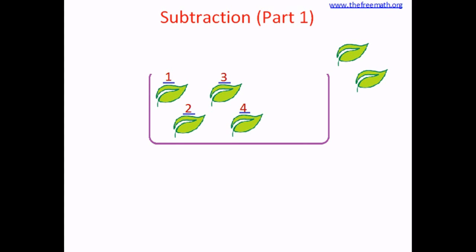When I take away two leaves, how many are left? Let's count — one, two, three, four. So when you take away two leaves from six, you are left with four leaves in the bin. Let's write this subtraction: six minus two equals four.